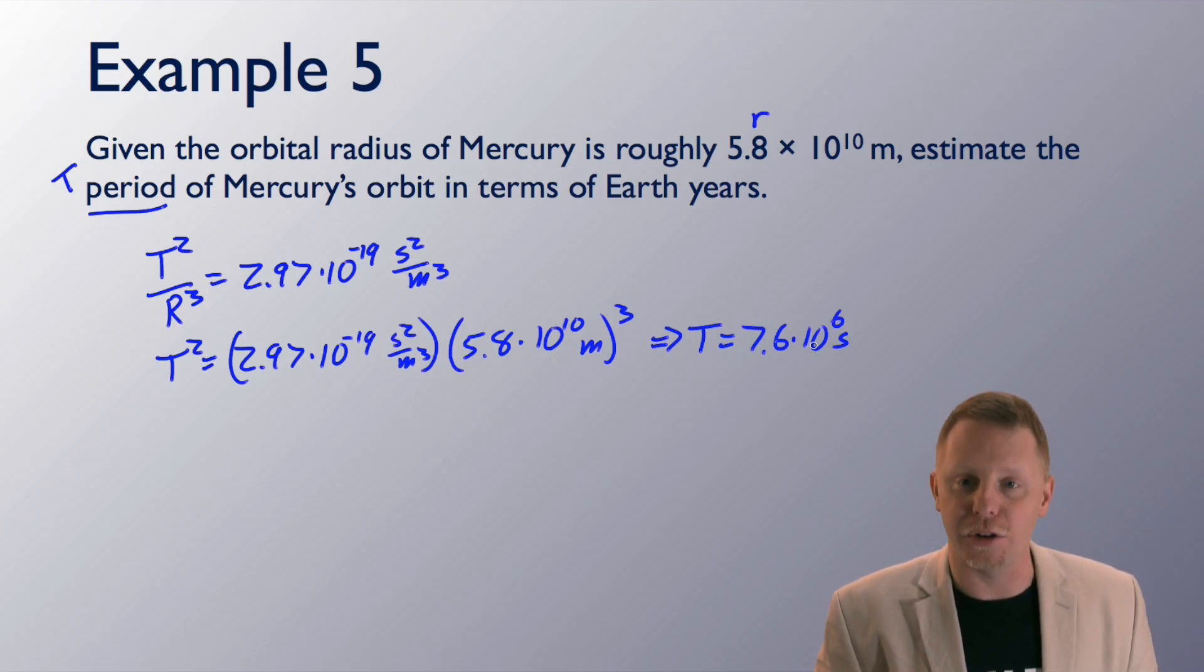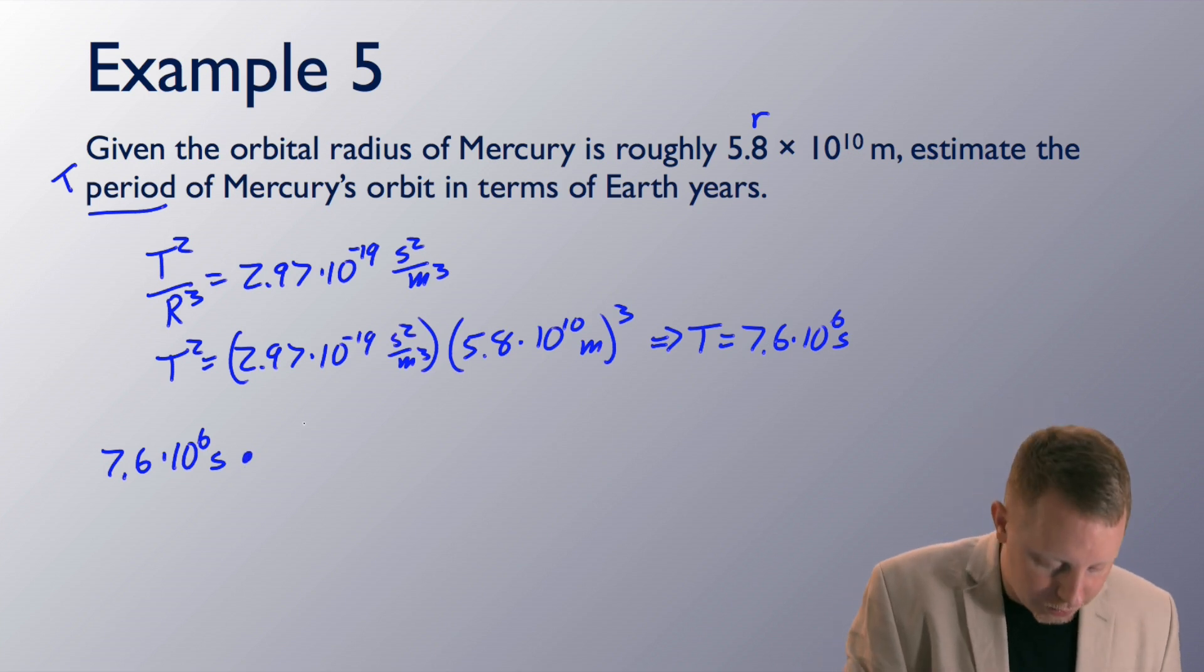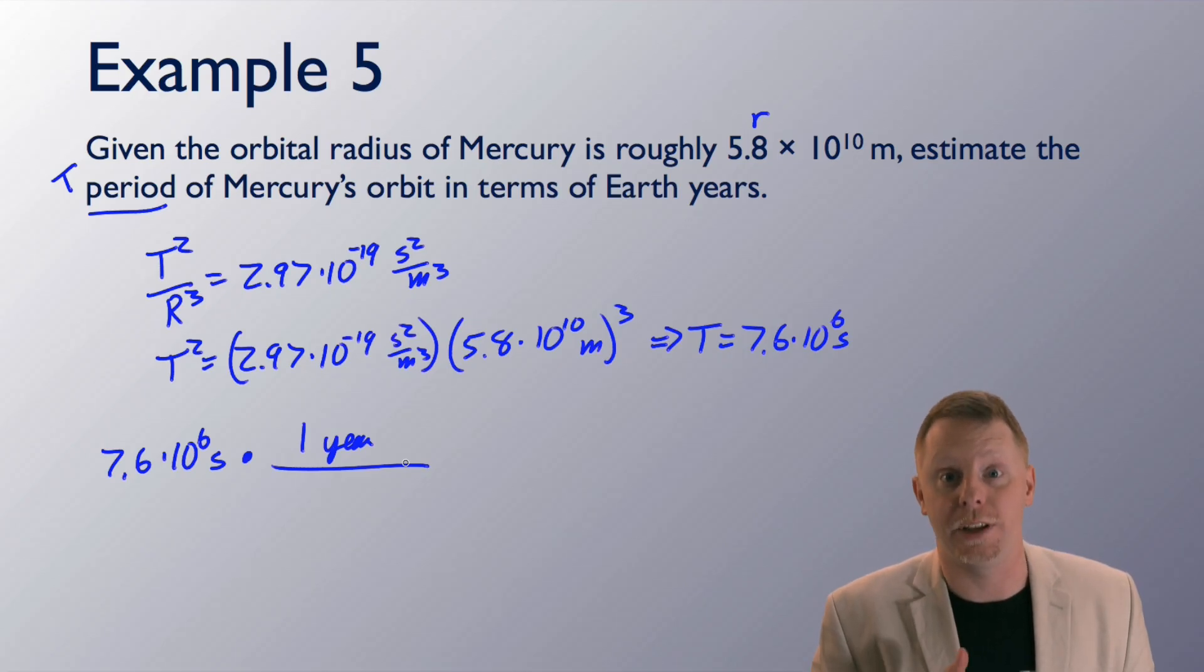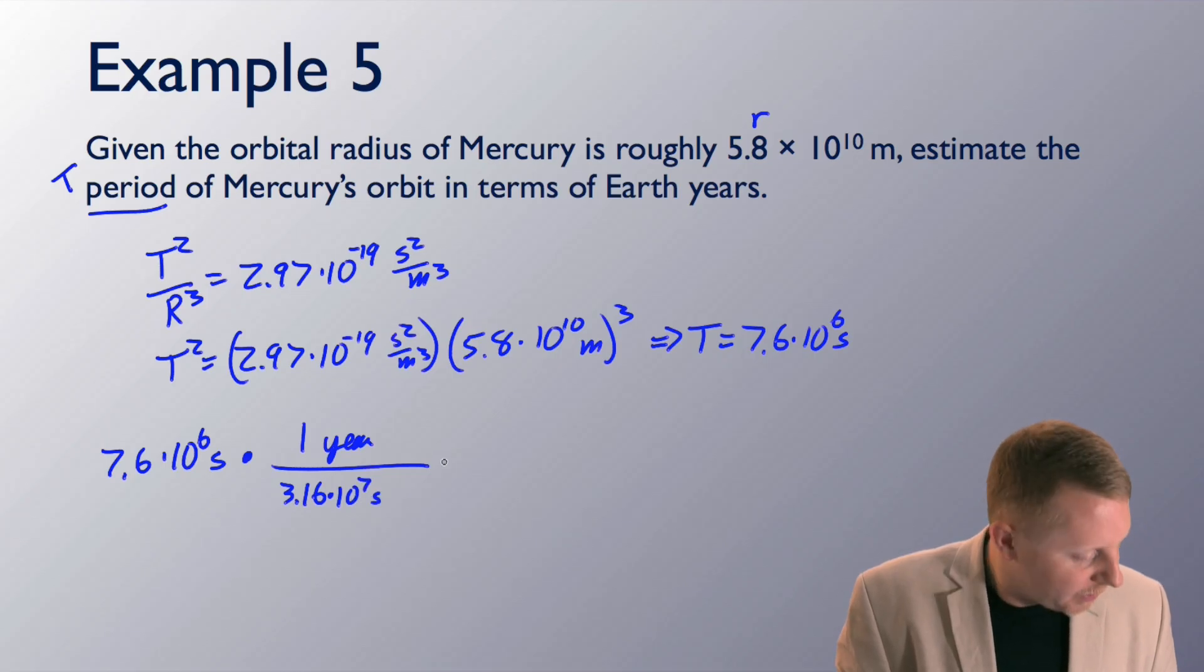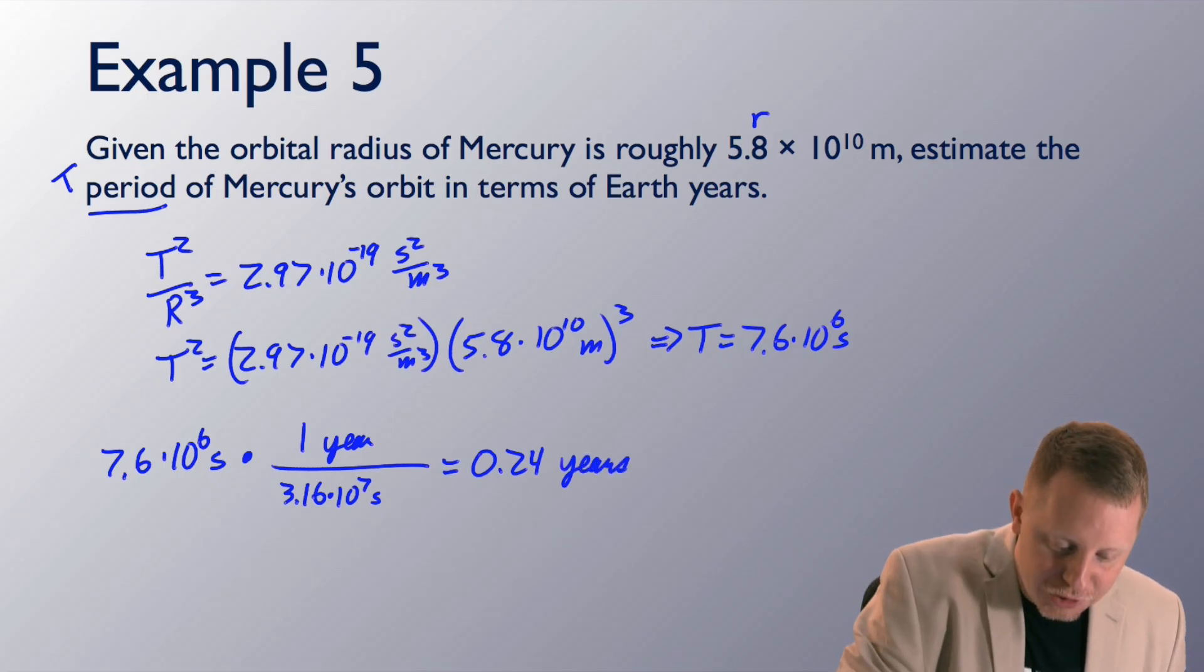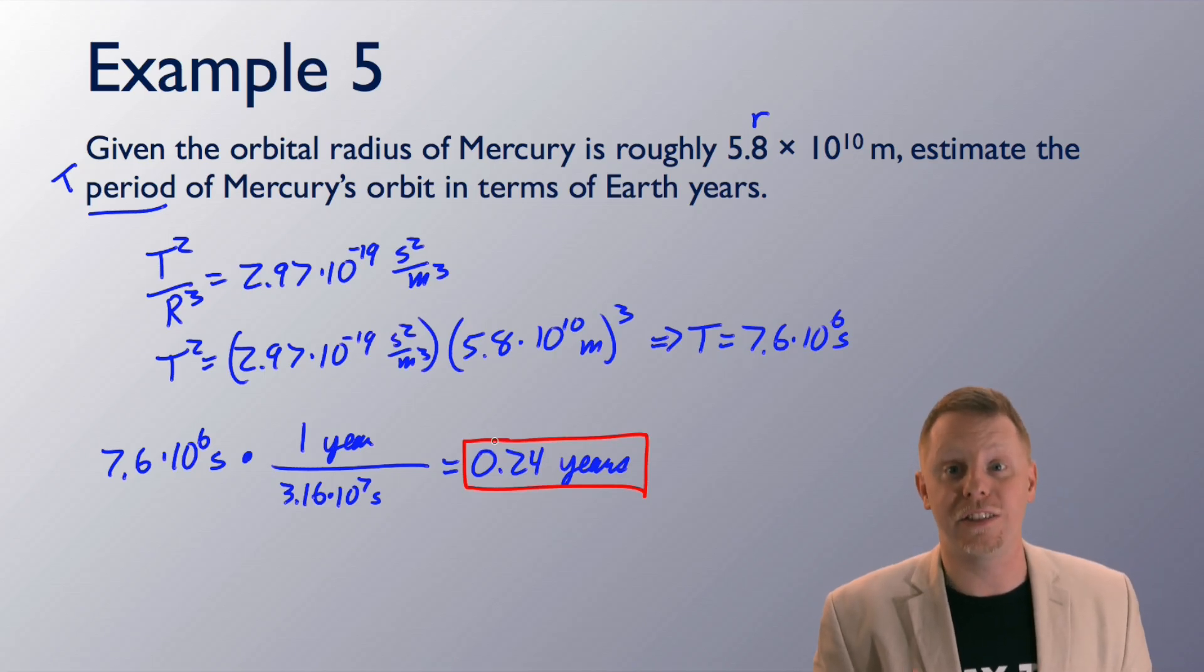Finally, let's convert that into Earth years. So, we have 7.6 times 10 to the 6th seconds. And here on Earth, 1 Earth year is 365 and a quarter days times 24 hours per day times 60 minutes per hour times 60 seconds per minute, or 3.16 times 10 to the 7th seconds gives us 0.24 years. And that should make sense. It's less than 1 Earth year because it has a shorter period. It's closer to the sun, consistent with what we know about Kepler's laws.